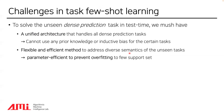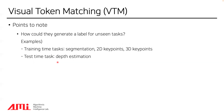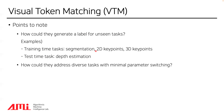We also need flexible and efficient methods to address diverse semantics of unseen tasks. For example, depth estimation requires overall semantic understanding of an image, but edge detection requires local semantic understanding. At the same time, the flexible and efficient method should be parameter-efficient to prevent overfitting to few support sets. There are two key questions: first, how could they generate a label for an unseen test task — can we generate a depth label when the model is trained on segmentation, 2D keypoint, and 3D keypoint? Second, how could they address diverse tasks using a unified model with minimal parameter switching?